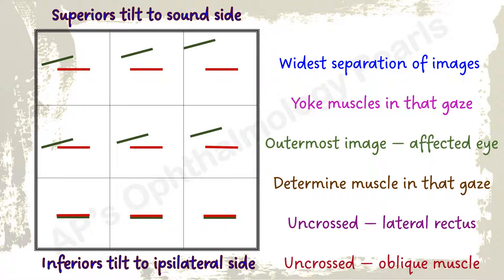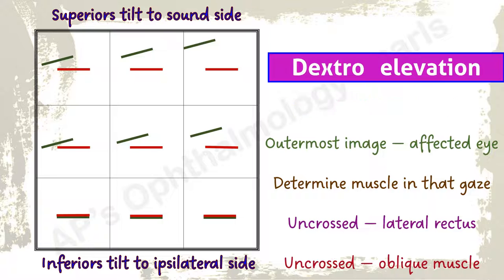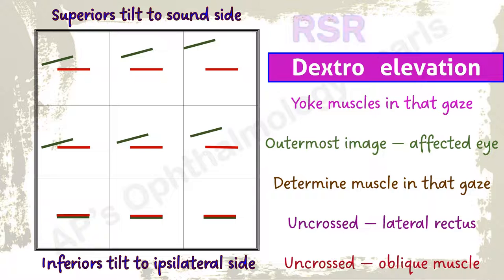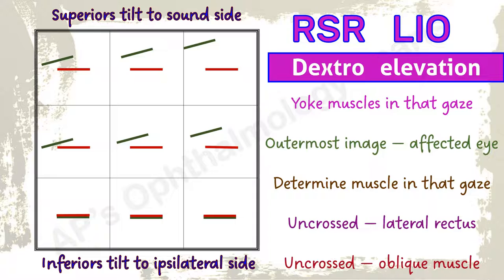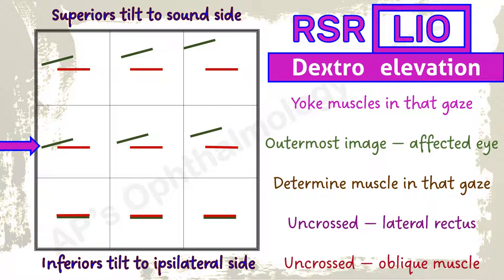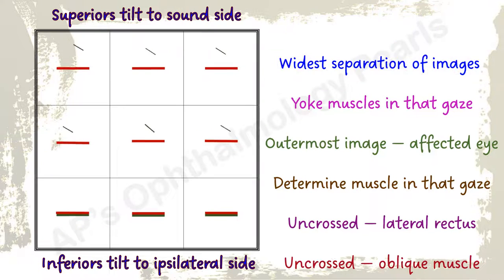Here the maximum separation of images is in dextro elevation. The yoke muscles acting in dextro elevation are the right superior rectus and the left inferior oblique. Green is the outermost image, so the left eye is involved — left inferior oblique palsy. This is an uncrossed diplopia, so the oblique checks out. Tilt is towards the left or ipsilateral side, so the inferior checks out.